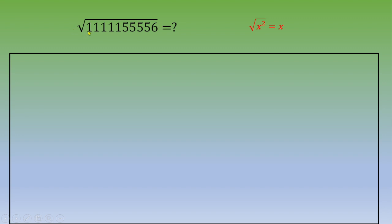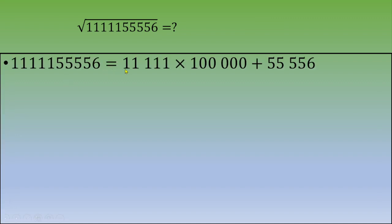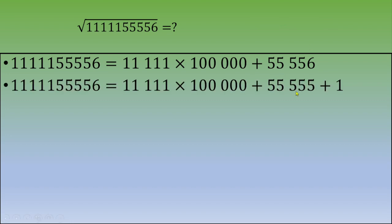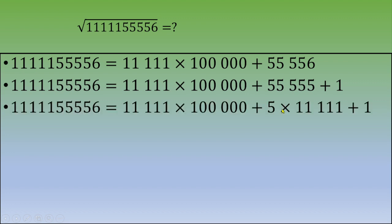This number has five ones and four fives and a six in its digits. We can write it as eleven thousand one hundred eleven times one hundred thousand, plus fifty-five thousand five hundred fifty-six. That last part can be written as fifty-five thousand five hundred fifty-five plus one, which is five times eleven thousand one hundred eleven, plus one.